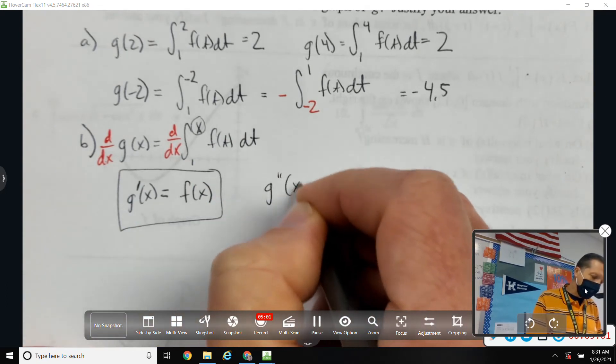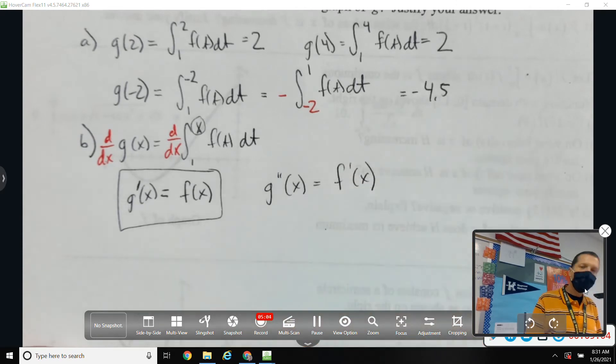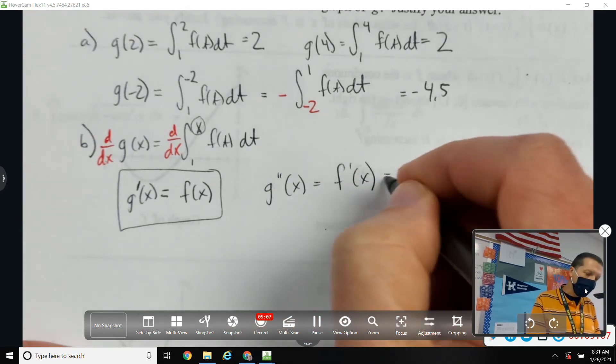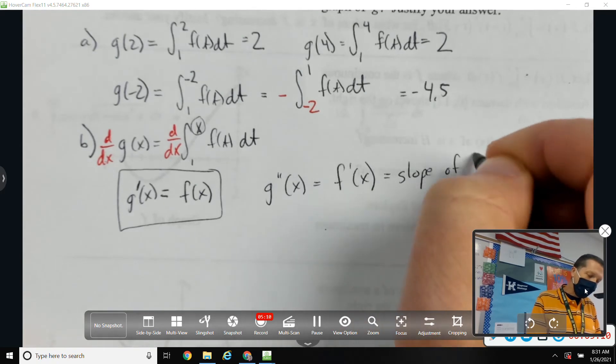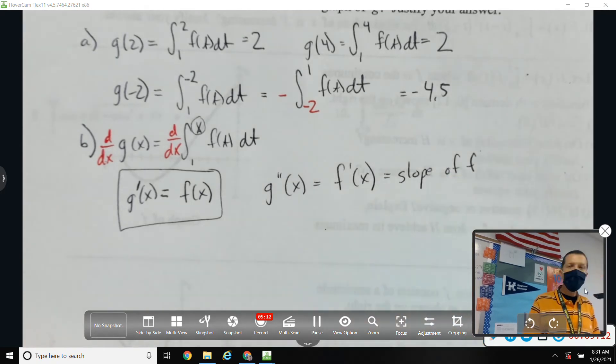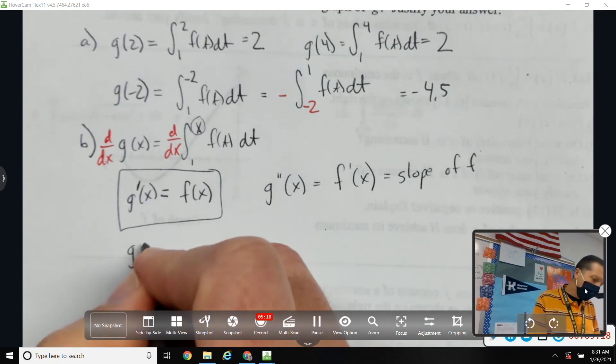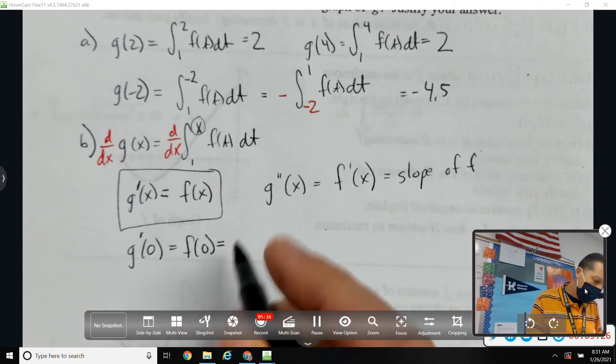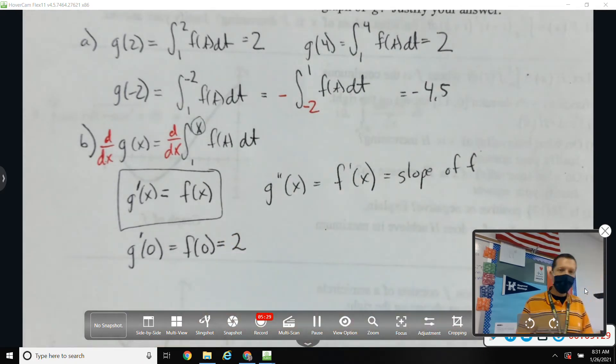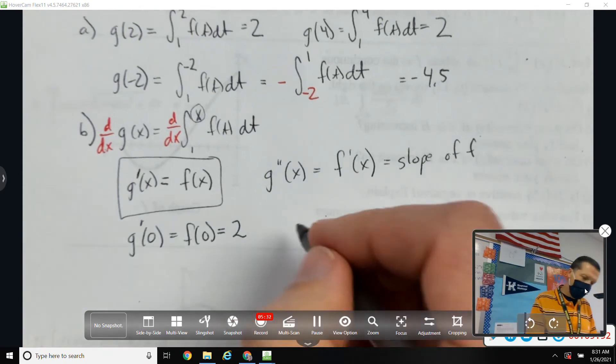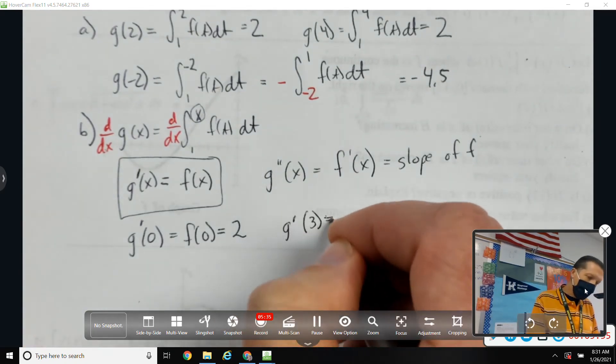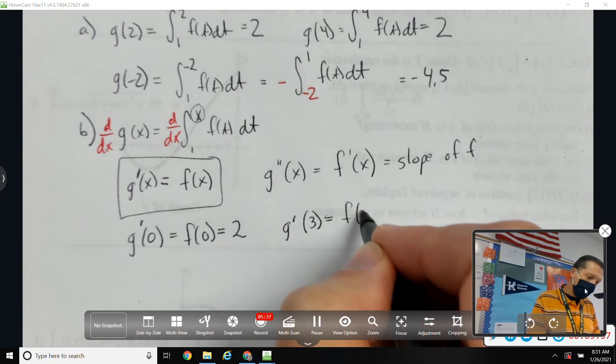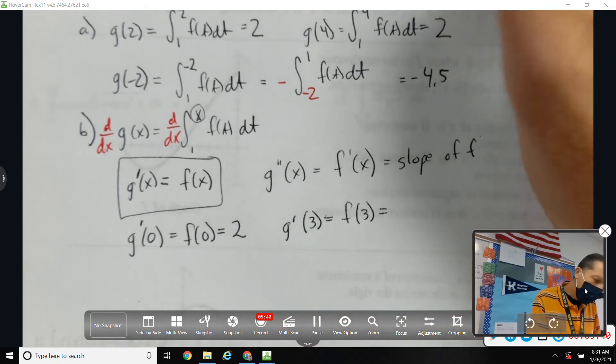I'm just going to go ahead and box this because that's probably a big deal. And I may as well say that's the slope of F. I don't need that for part B, but I'm guessing that's going to be in the near future. So G prime of 0, that would be the same as F of 0, but I have the graph of F. F of 0 is 2. G prime of 3 is the same thing as F of 3. F of 3 is 0.